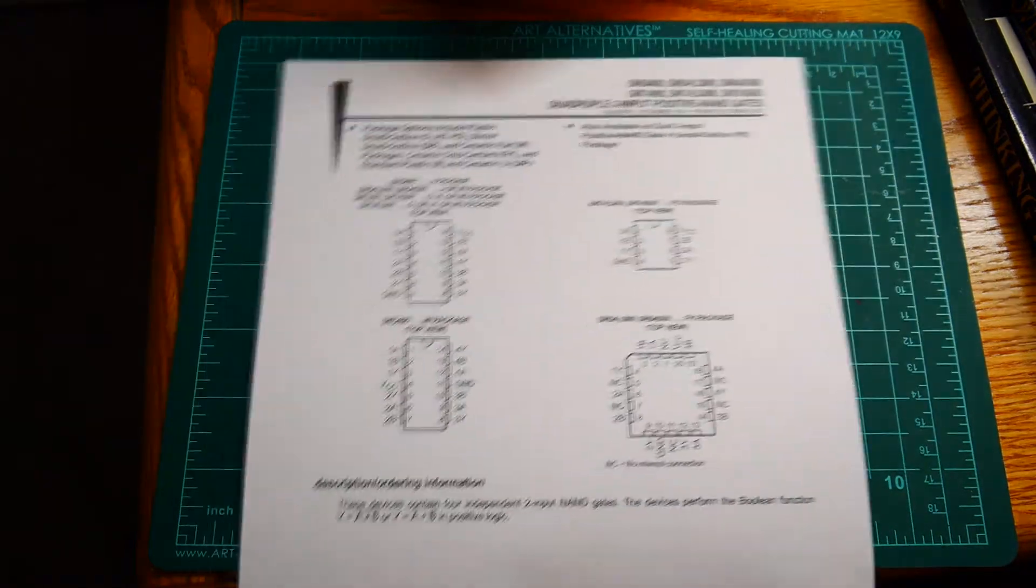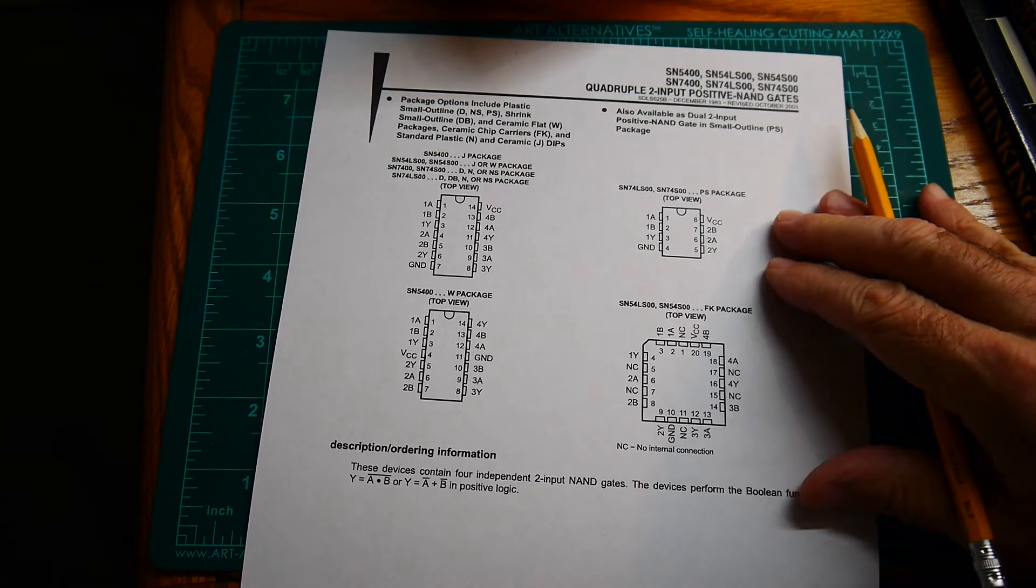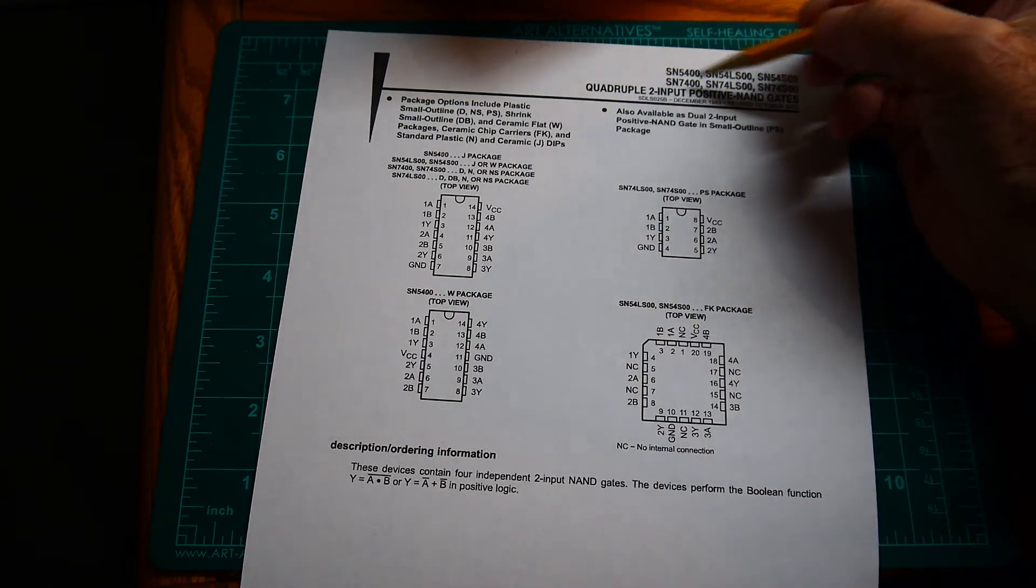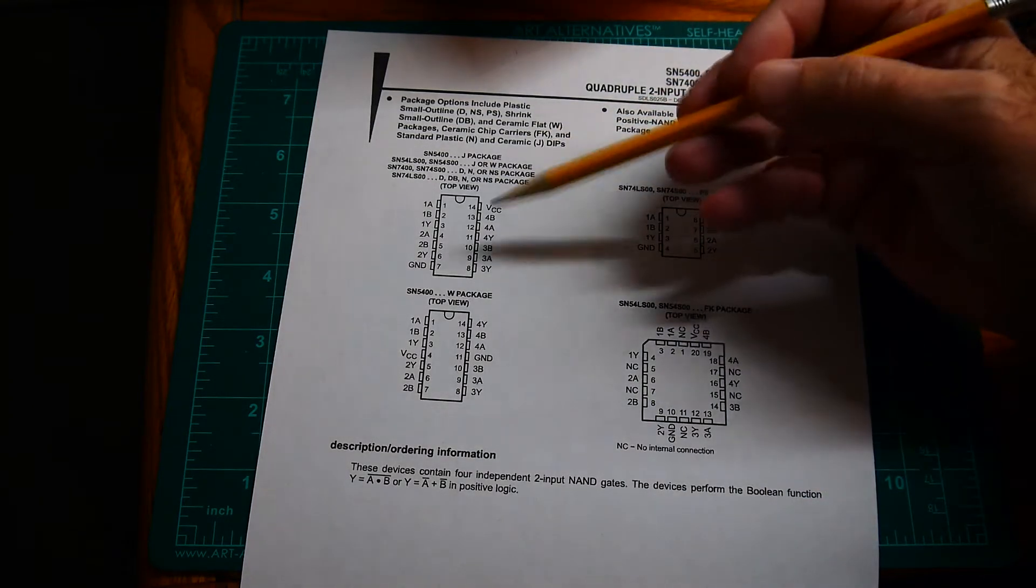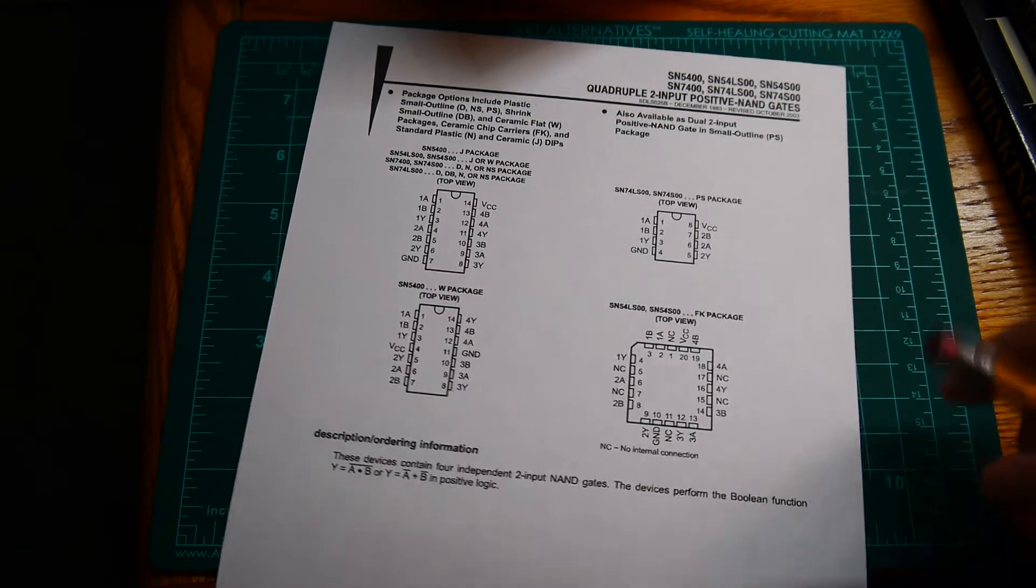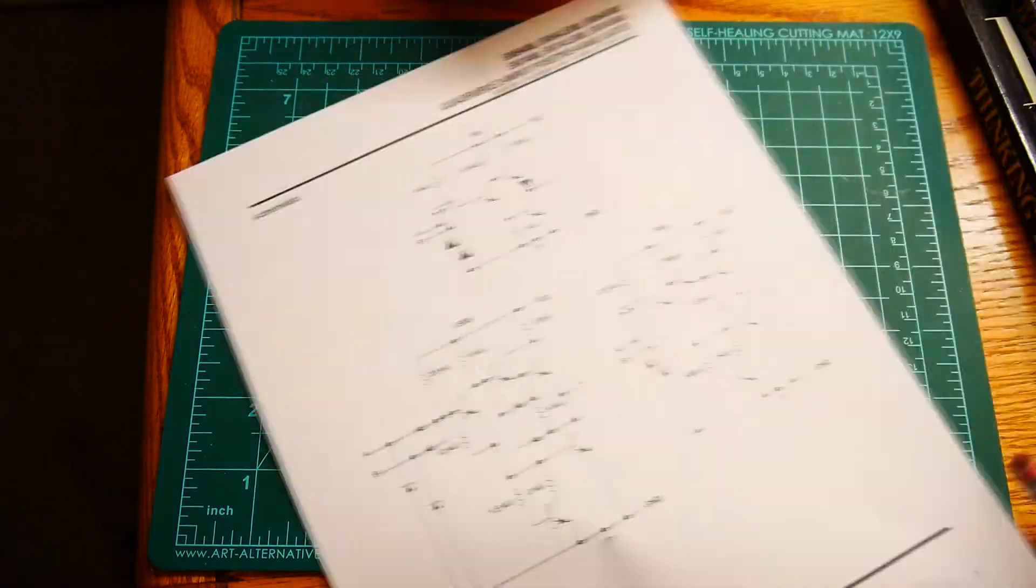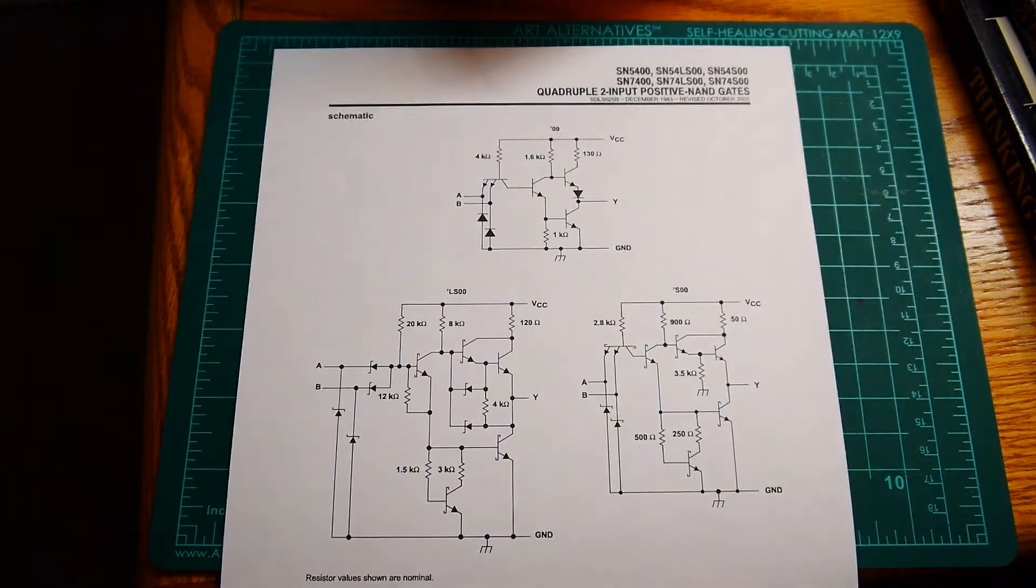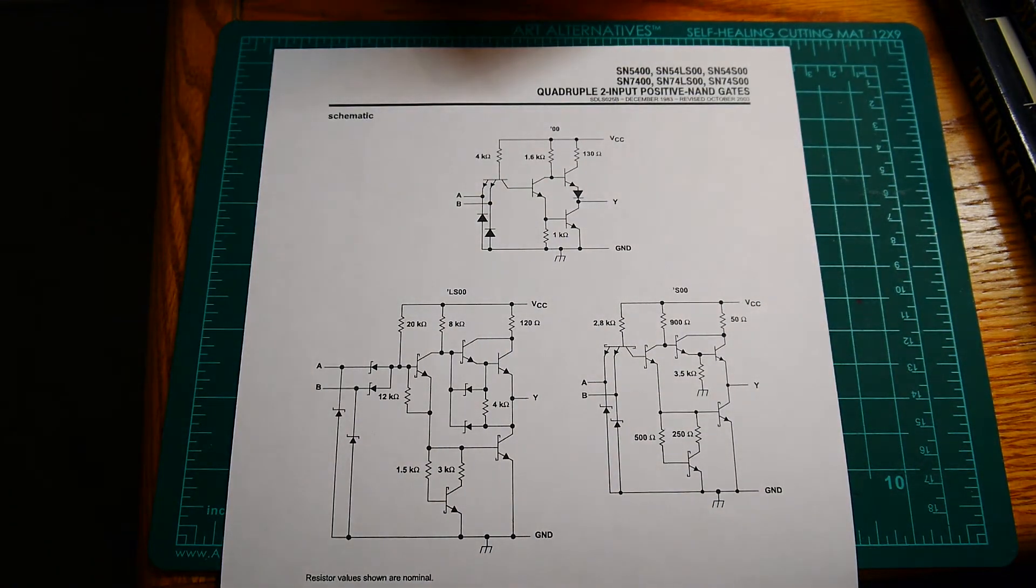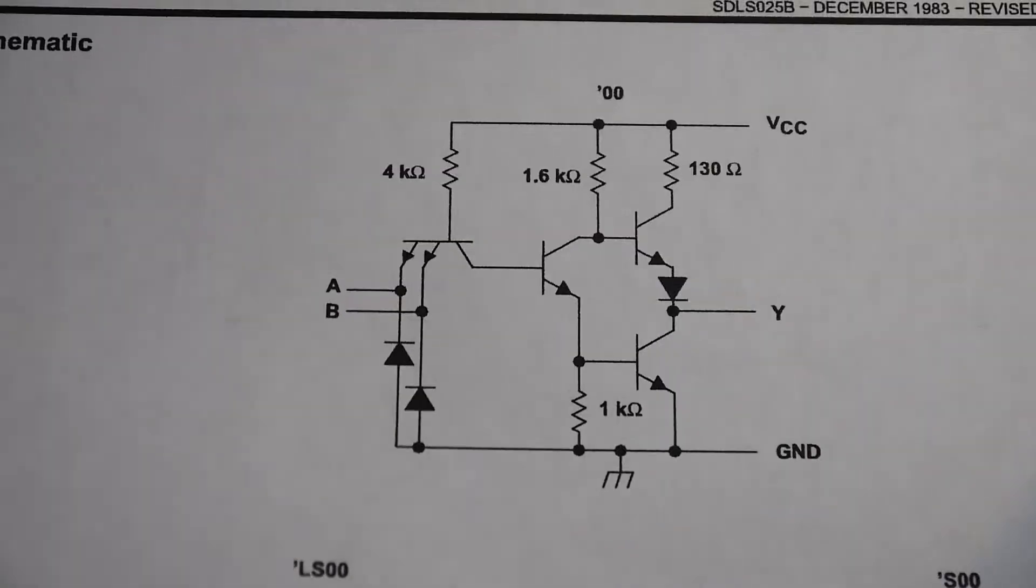So I printed out here a datasheet from Texas Instruments on one of the most simple devices, the 7400. Just a NAND gate. Quadruple two-input positive NAND gate. And let's take a look at what these circuits kind of look like. So they're very simple. Let me zoom in here so we can see this better.